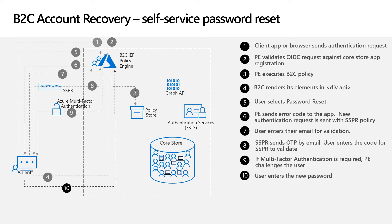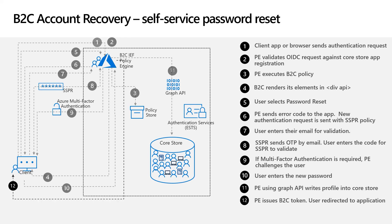Once Azure AD B2C knows you are who you say you are, you can go ahead and enter a new password. The policy engine uses the Graph API to write your new password securely into the core store. The policy engine then completes the journey by issuing an Azure AD B2C token to the application and you are logged in. That completes the password reset flow.